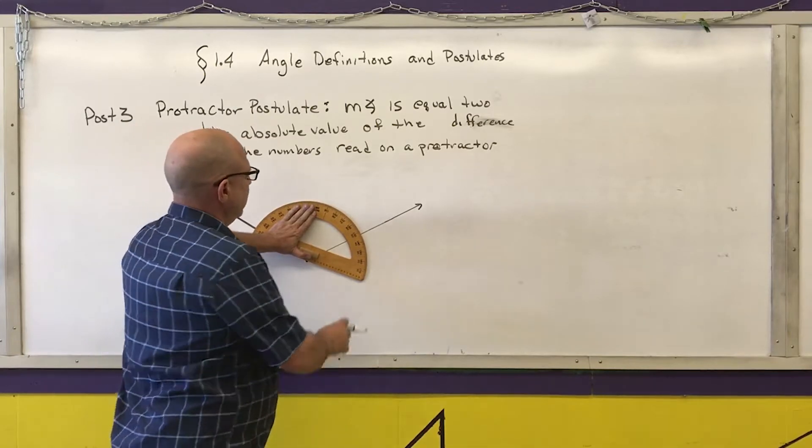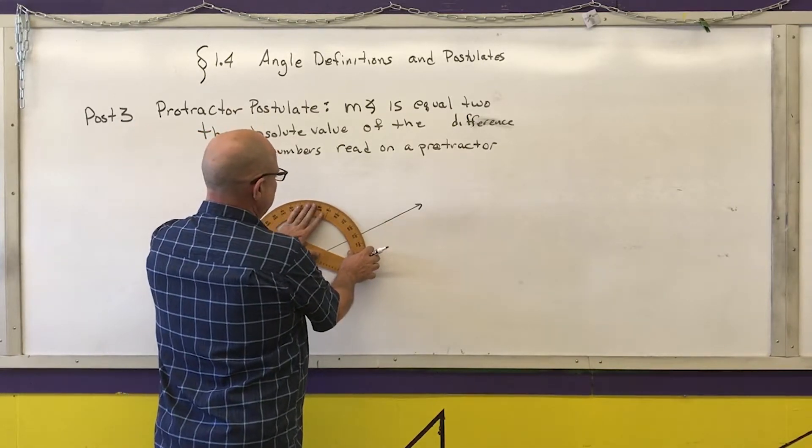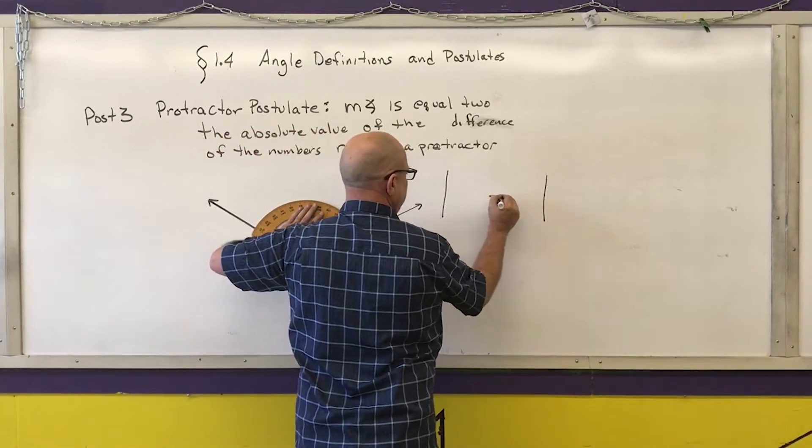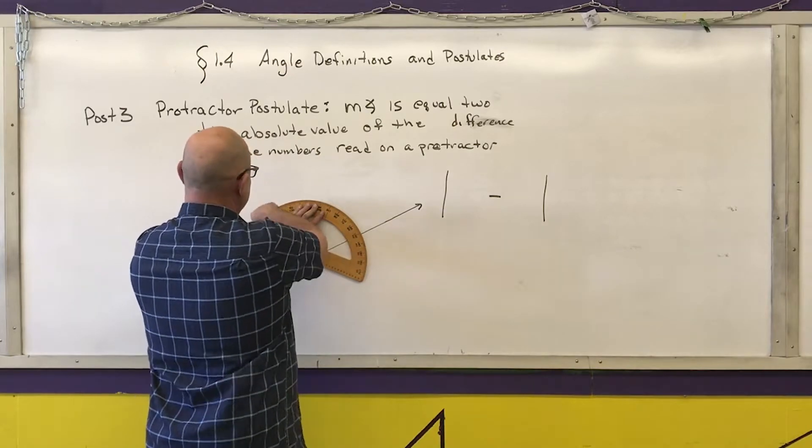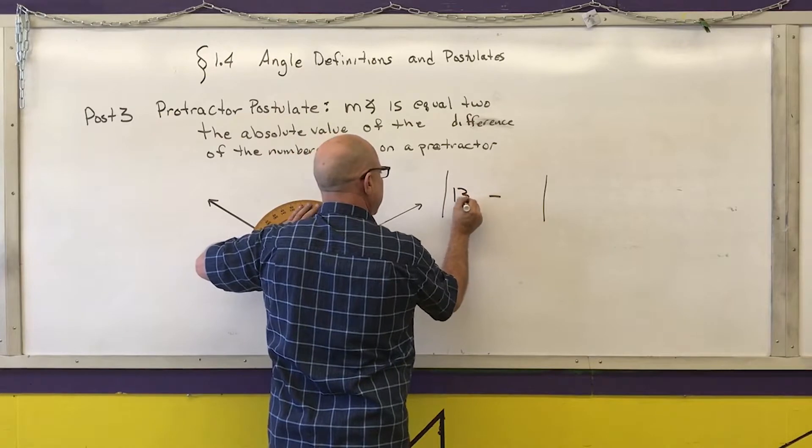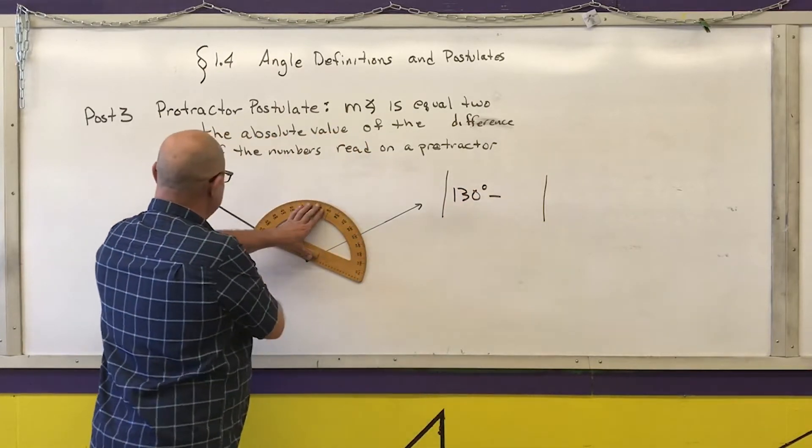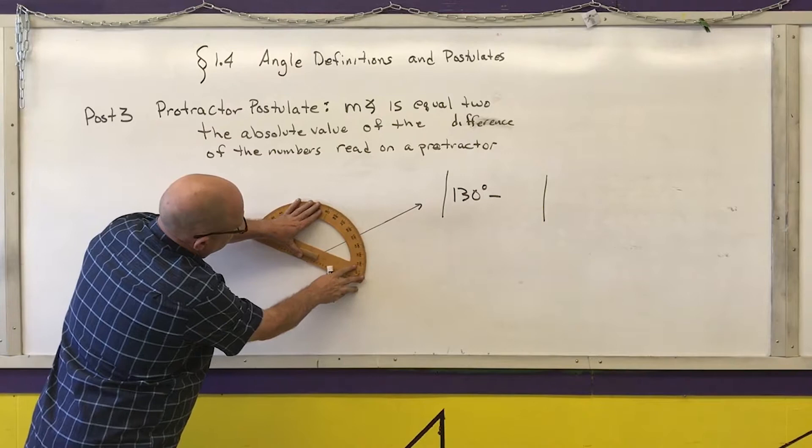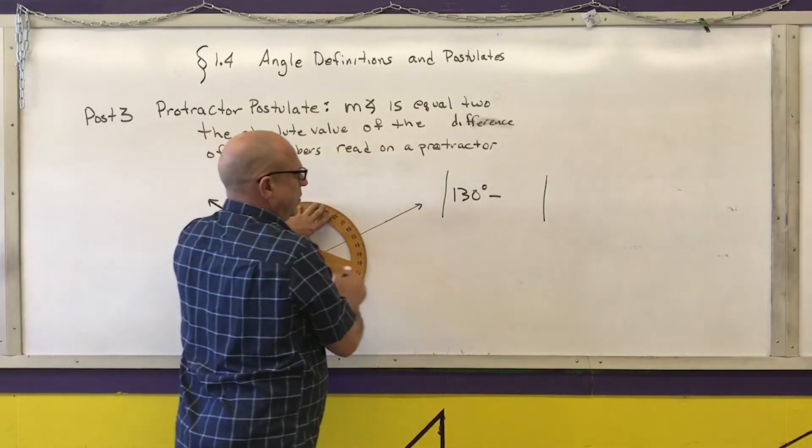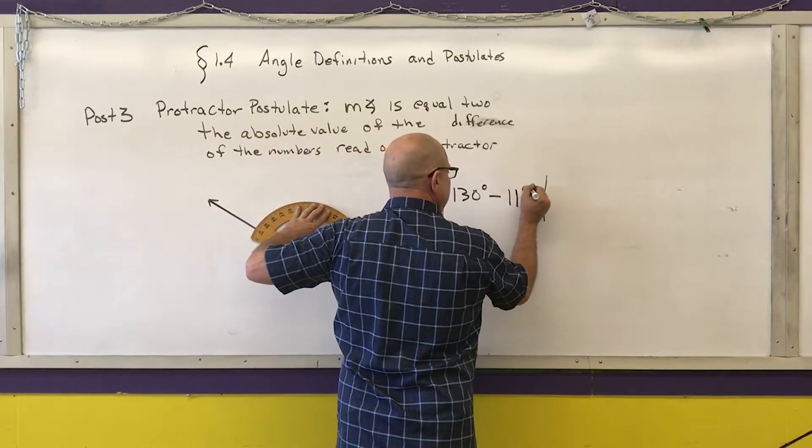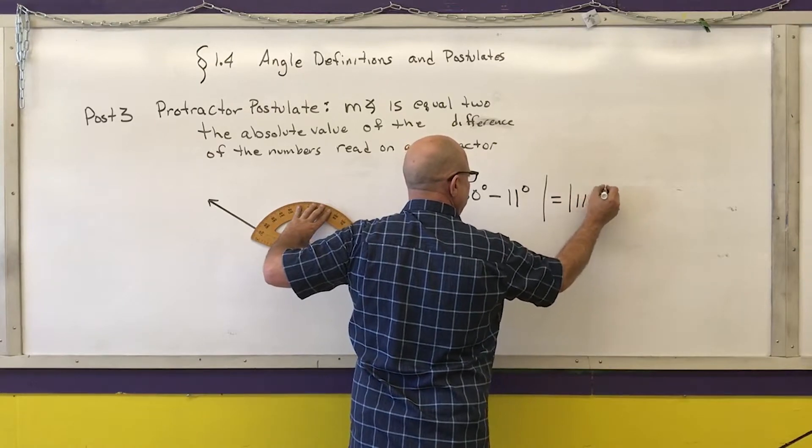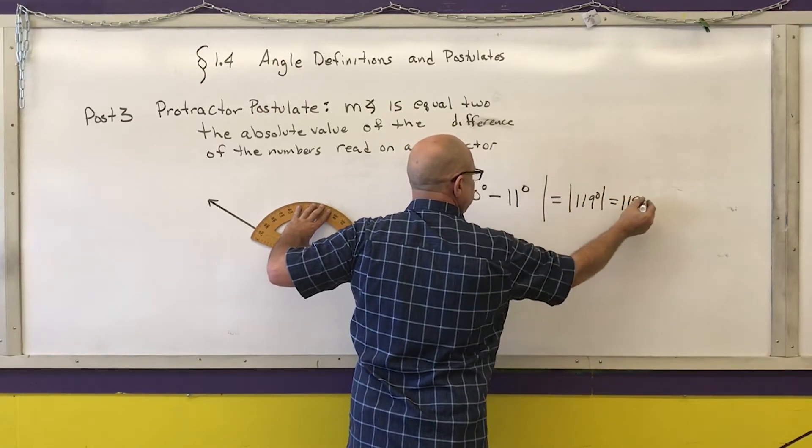And what it tells me is that the measurement of the angle is the absolute value of the difference of the two numbers I read off. I'm going to use the outside numbers here and this outside number is 130 degrees and this outside number looks to be about 11 degrees. So my angle is going to be equal to the absolute value of 119 degrees which is 119 degrees.